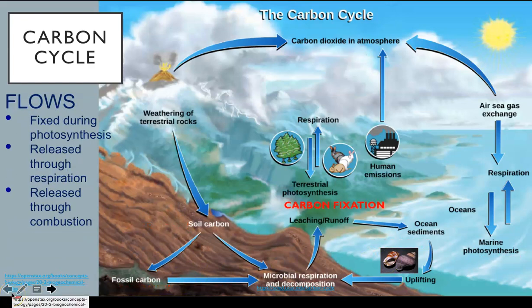Flows in the carbon cycle include the process of carbon being fixed during photosynthesis — this is called carbon fixation — the release of carbon from the process of respiration, and the release of carbon through combustion. These processes cause carbon to circulate through living and non-living systems within the ecosystem.